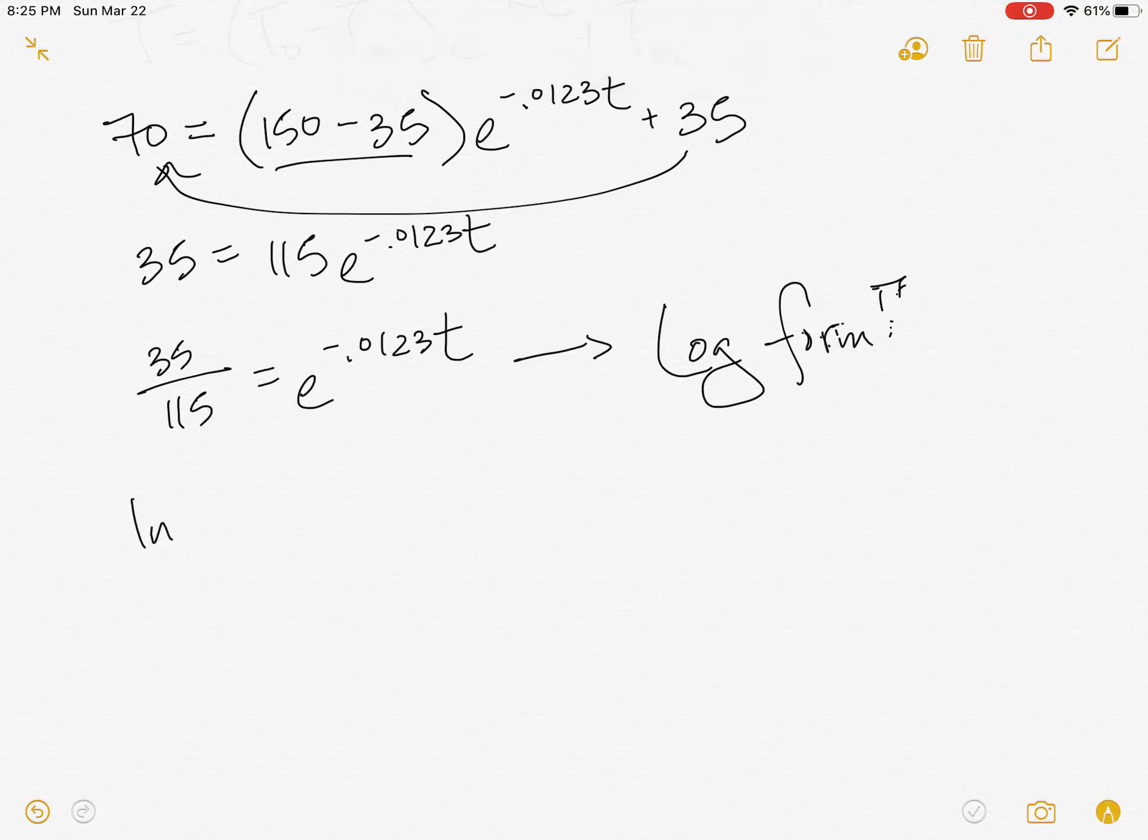So I'm going to take a natural log of 35 over 115 equals negative 0.0123t, and then to find t, I'll take that natural log.